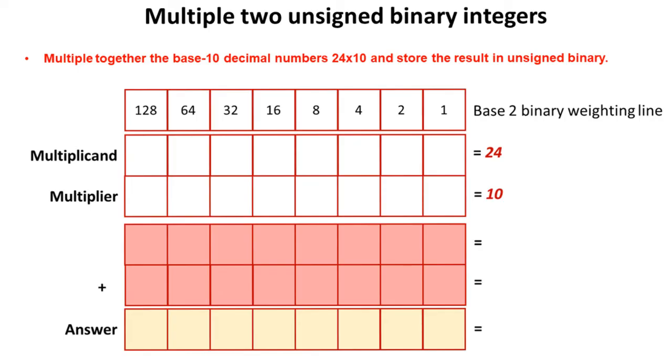And I will write out the multiplicand of 24. So that's the same as before. It's 0, 0, 0, 1, 1, 0, 0, 0. And then we'll just write out the multiplier of 10, which obviously is 0, 0, 0, 0, 1, 0, 1, 0.